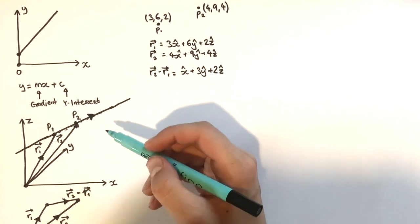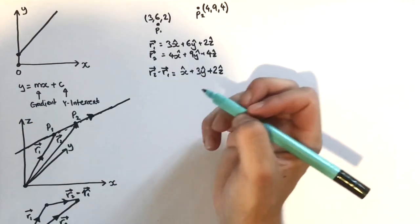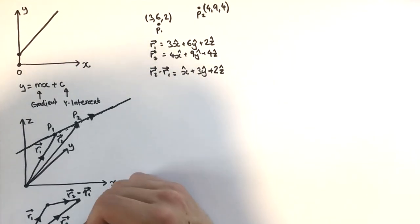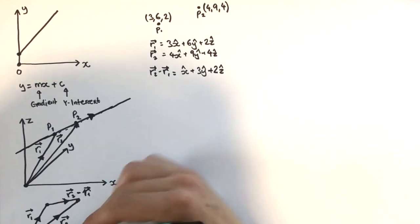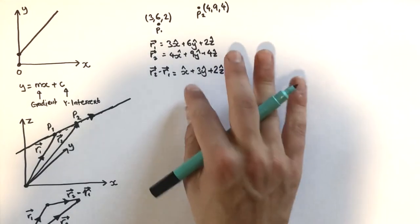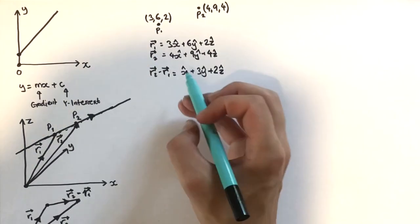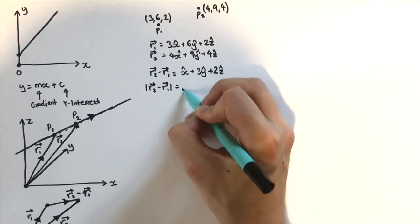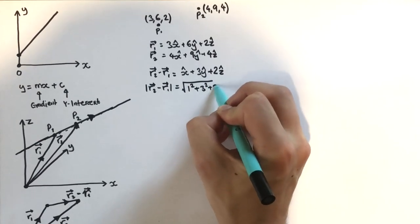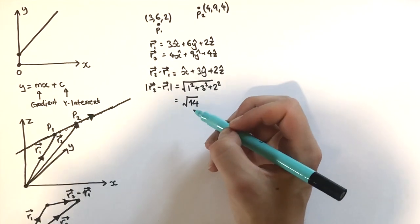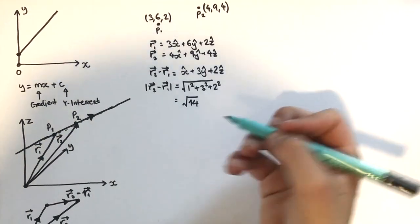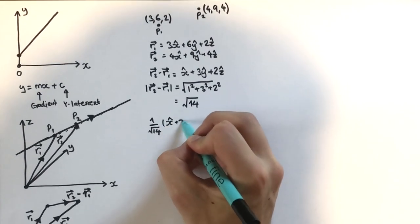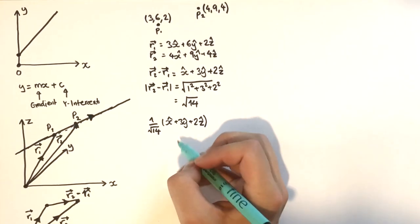Now we could convert this direction vector into a unit vector, which is a more elegant approach. The magnitude of r2 minus r1 is the square root of 1² + 3² + 2², which equals the square root of 14. So our unit direction vector is (1/√14)(x̂ + 3ŷ + 2ẑ). You don't have to use the unit vector — the scalar lambda will just be slightly different — but let's do it for completeness.